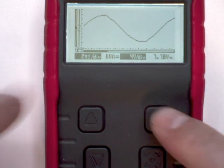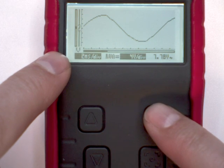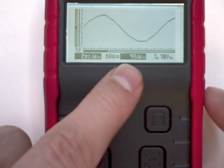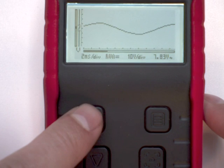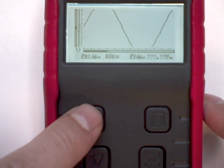First, we're going to change the volts per division. So I select volts per division, and now with the arrow keys I can select the correct volts per division setting.